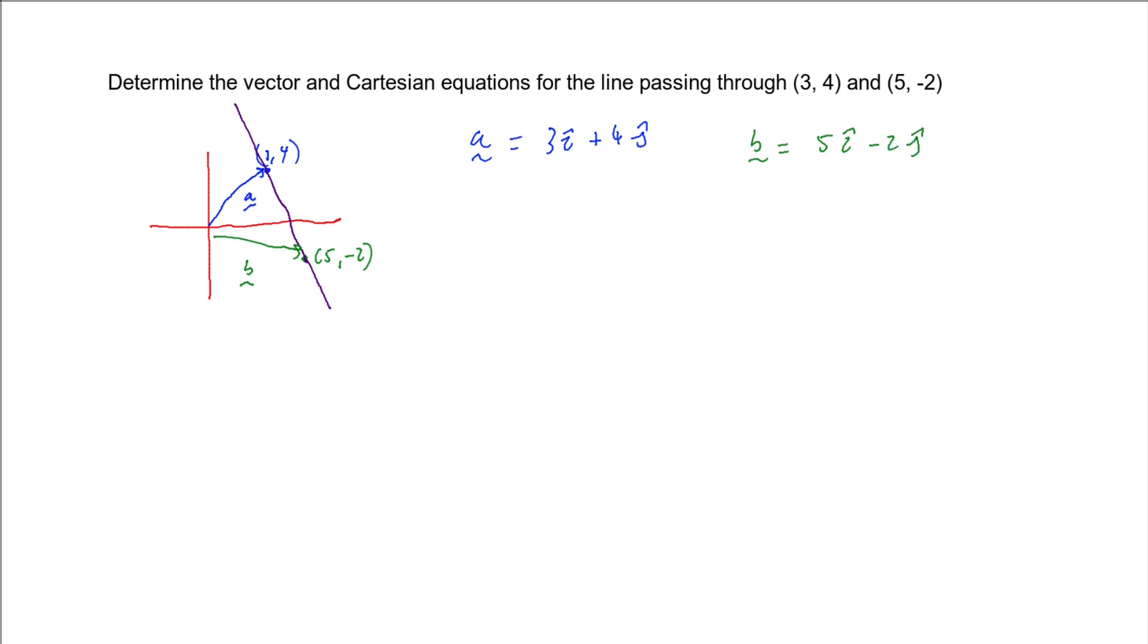And we then define what's the vector going from one point to the other. So if I call this point a and point b, then the vector from a to b, which we typically call d, is going to be vector b minus vector a. So we're going to do 5i minus 2j and subtract off the entirety of vector a, which is 3i plus 4j. So if we do that, that gives us vector d: 5i minus 3i is 2i, and negative 2j take 4j is going to be minus 6j.